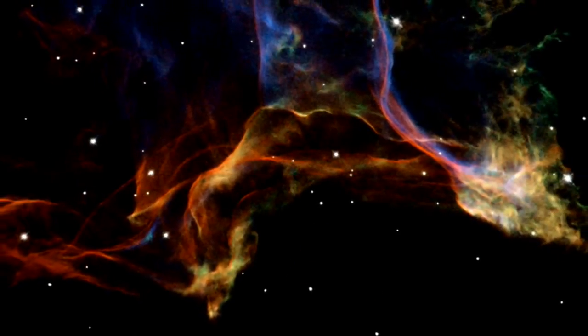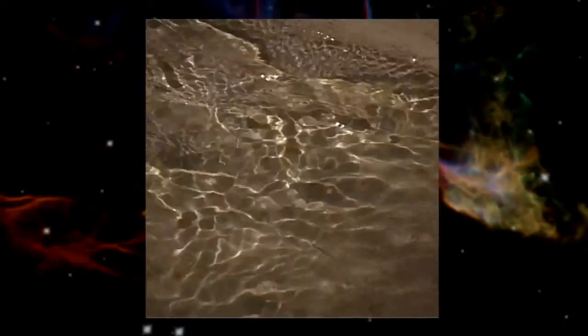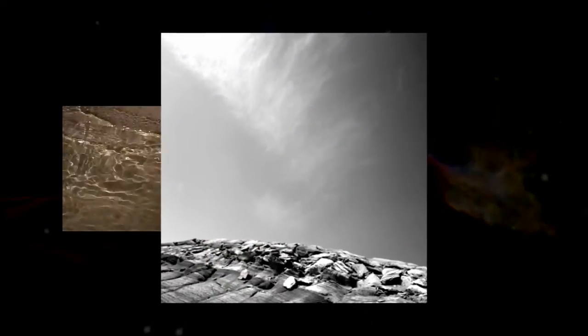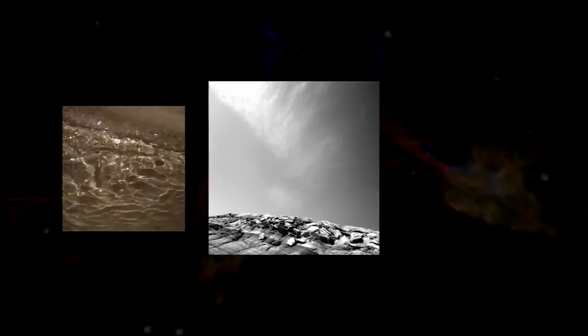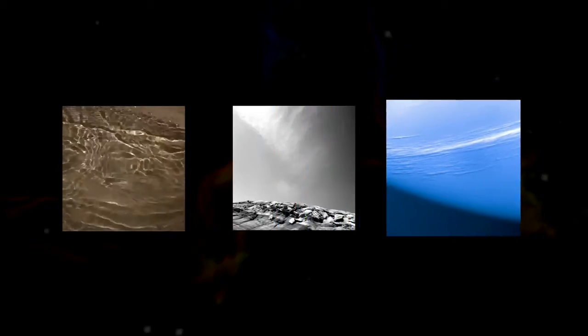The Hubble images of the Veil Nebula are striking examples of how processes that take place hundreds of light-years away can sometimes resemble effects we see around us in our daily lives. There are similarities with the patterns formed by the interplay of light and shadow on the bottom of a swimming pool, rising smoke or wispy cirrus clouds.